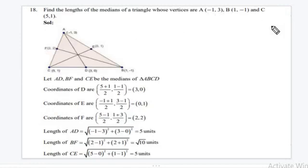And the length of the median of a triangle whose vertices are given. The coordinates of the vertices are specified, with coordinates including the point at (3,0) and similarly other points.